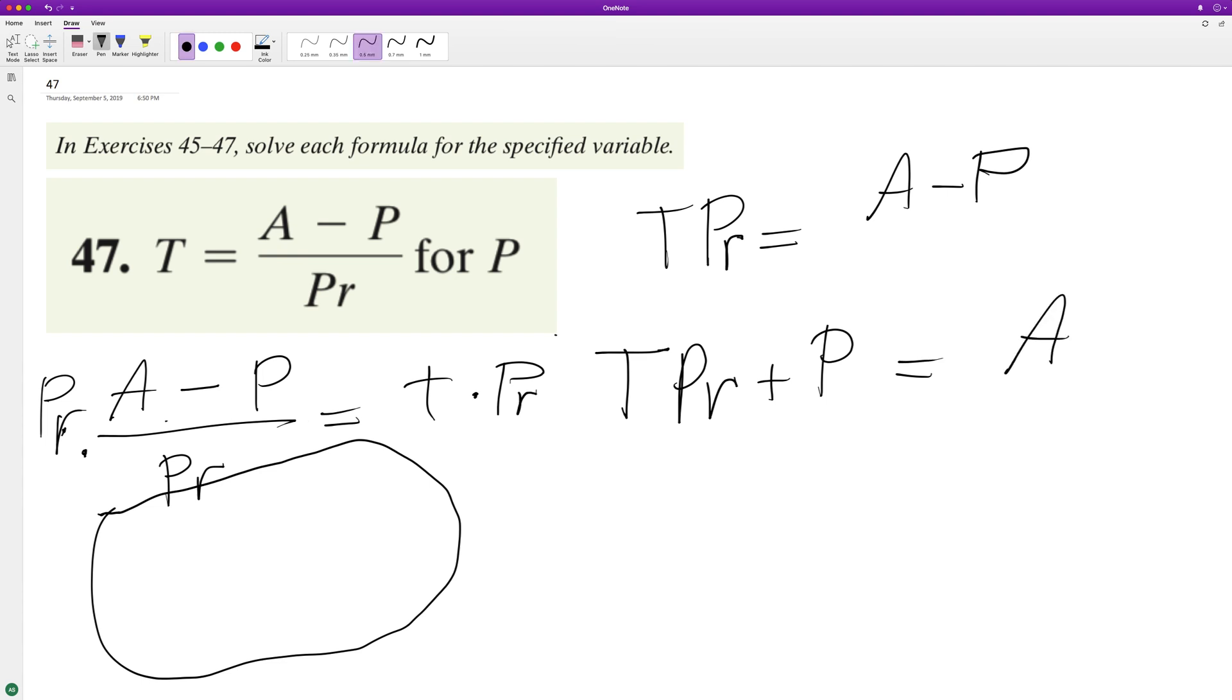is factor out a P, so we have P quantity TR plus 1 equals A. And finally, divide through by that, so we have P is equal to A over TR plus 1. And that's it.